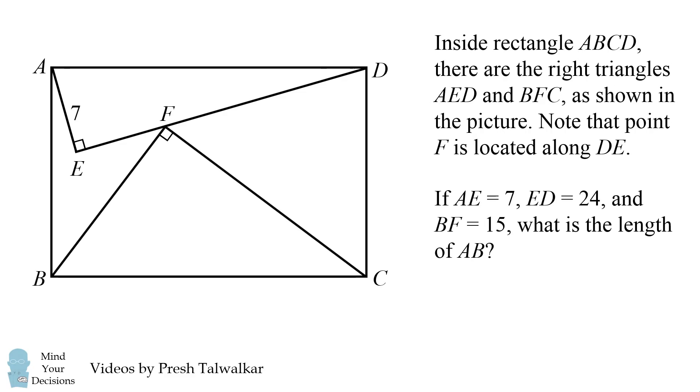If AE is equal to 7, ED is equal to 24, and BF is equal to 15, what is the length of AB? I thank Raul from Indonesia for sending me this problem. Can you figure it out? Give this problem a try and when you're ready keep watching the video for a solution.